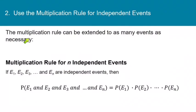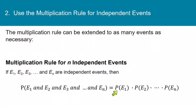The multiplication rule can be extended to as many events as necessary — we're not just locked into using it two events at a time. If event 1, event 2, event 3, and so on to event n are independent events, then the probability of event 1 and event 2 and event 3 and so on to event n equals the probability of event 1 times the probability of event 2 times and so on to the probability of event n. You just keep multiplying those probabilities together.